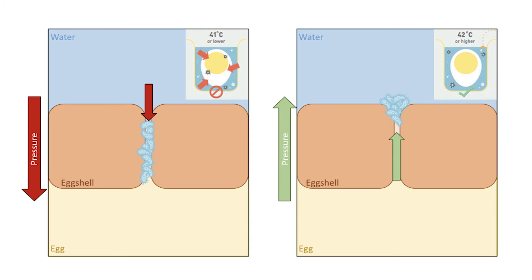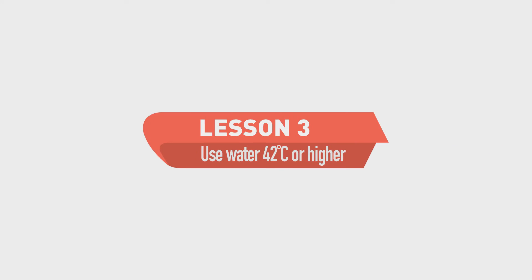To limit the number of bacteria from the outer shell to the inner shell via capillary action, the temperature of the water used to wash eggs should be above 41 degrees Celsius. This is egg washing lesson number three. Use water above 41 degrees Celsius.